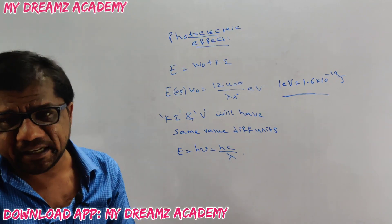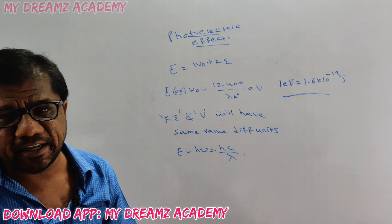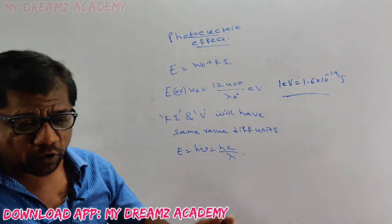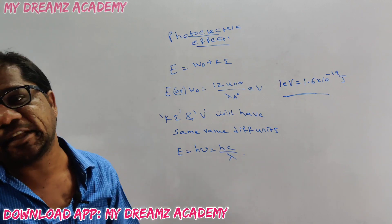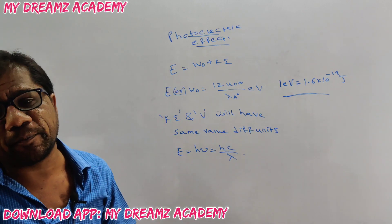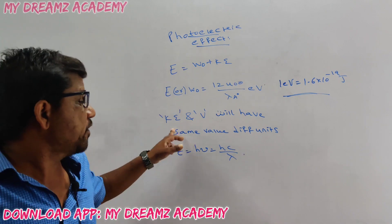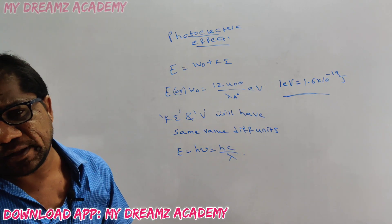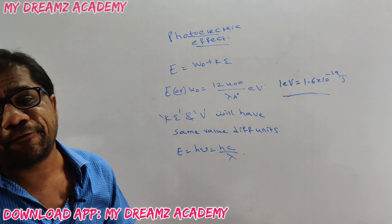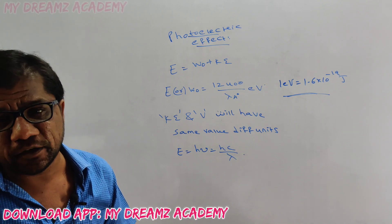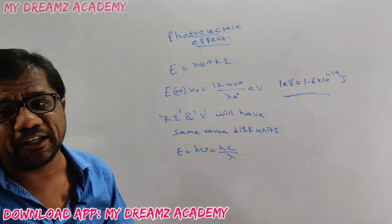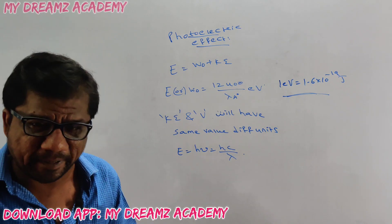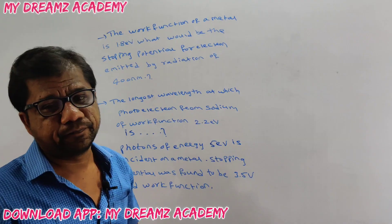Stopping potential is the potential required to stop the moving electron. The value of stopping potential will be the same as that of the kinetic energy of the photoelectrons, but with different units. This effect is called the photoelectric effect — photons striking the metal cause electrons to be emitted.